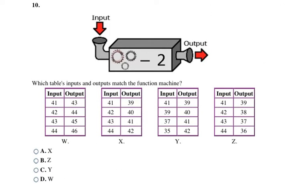Here's another function machine, this time with minus 2 as the pattern. I'm looking for inputs where subtracting 2 gives the output. Input 41 minus 2 equals 39 — checks out; 42 minus 2 equals 40 — checks out; 43 minus 2 equals 41 — checks out; 44 minus 2 equals 42 — checks out. For every input, subtracting 2 gives the output, so my final answer is X, which is choice A.